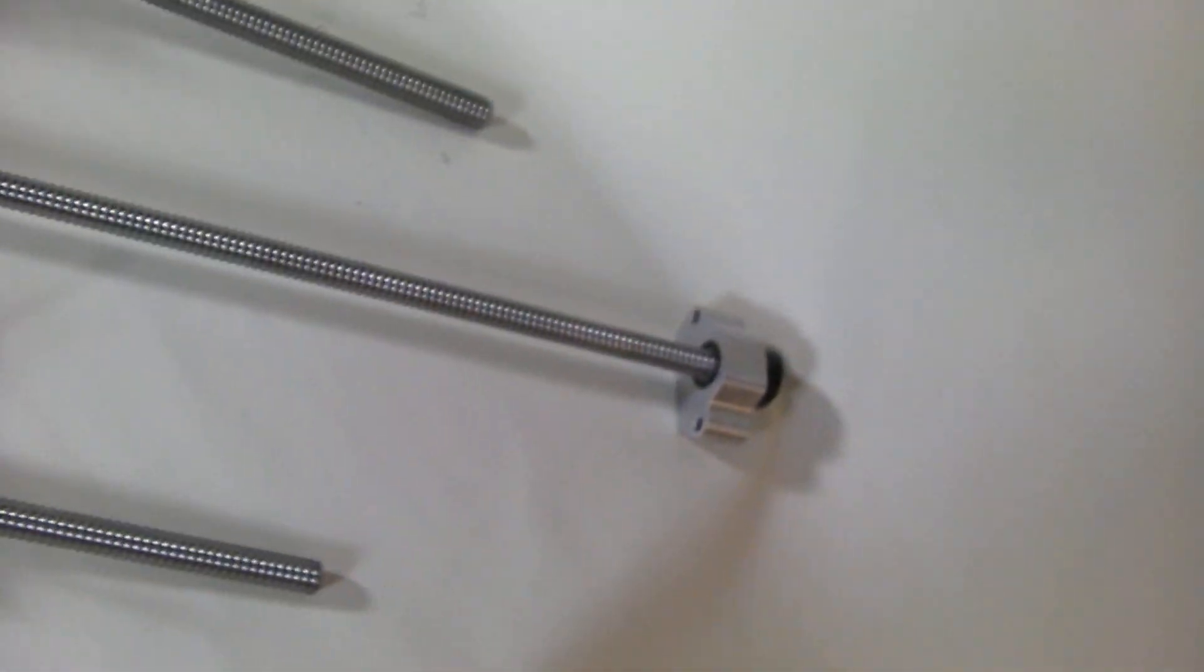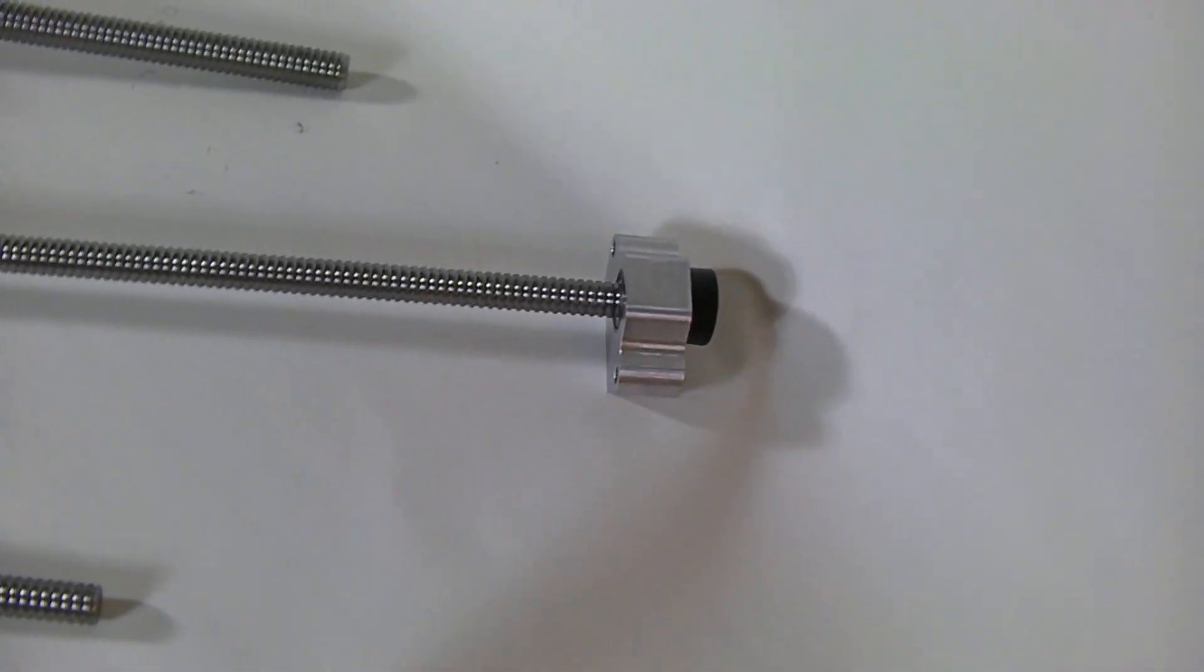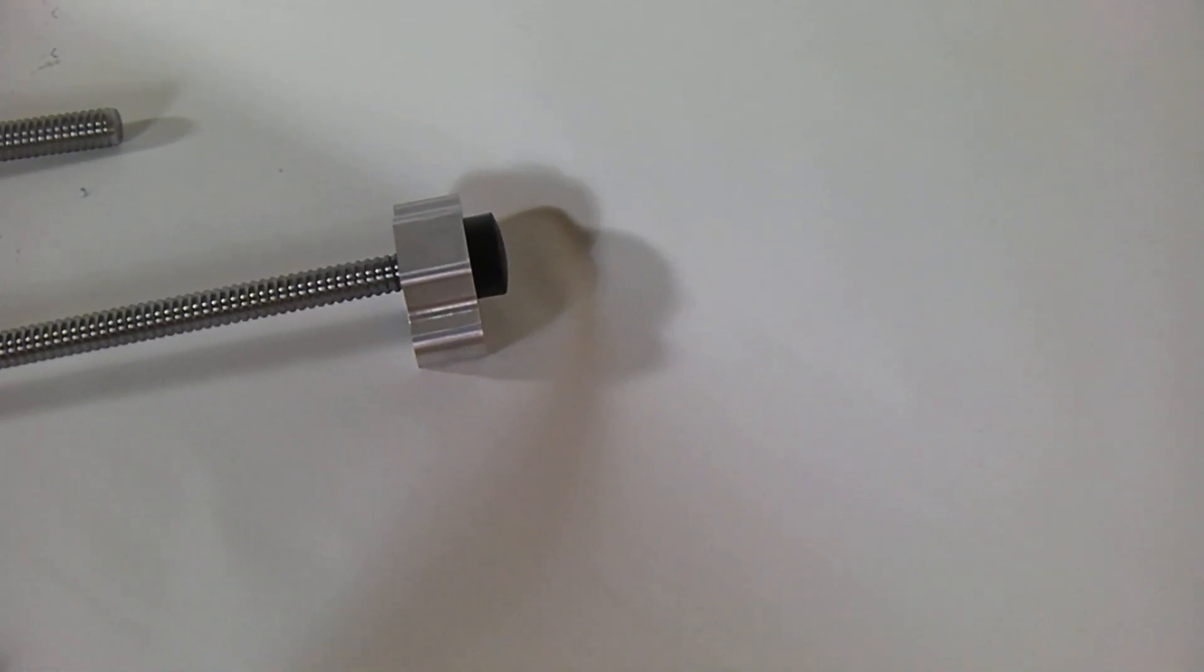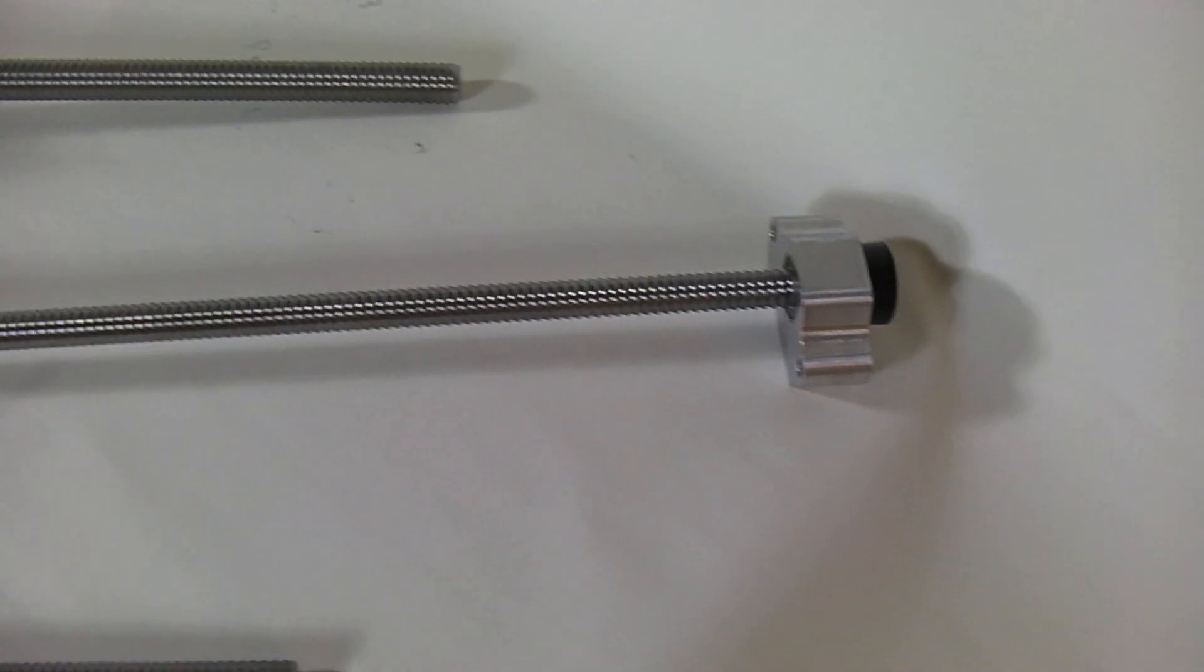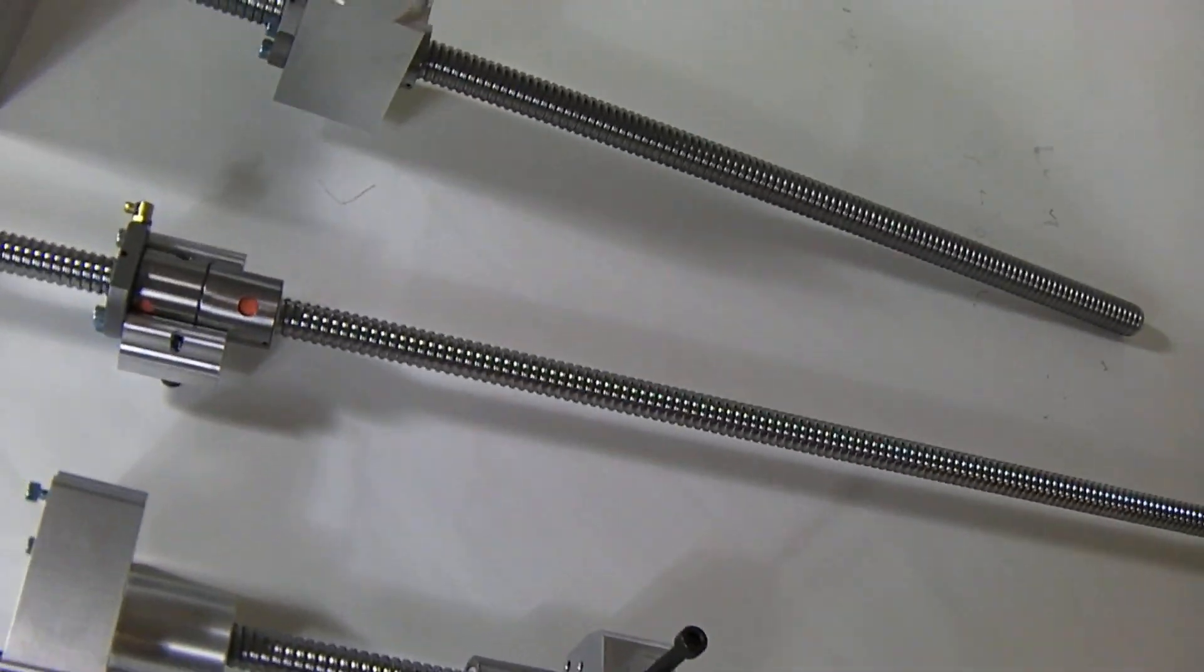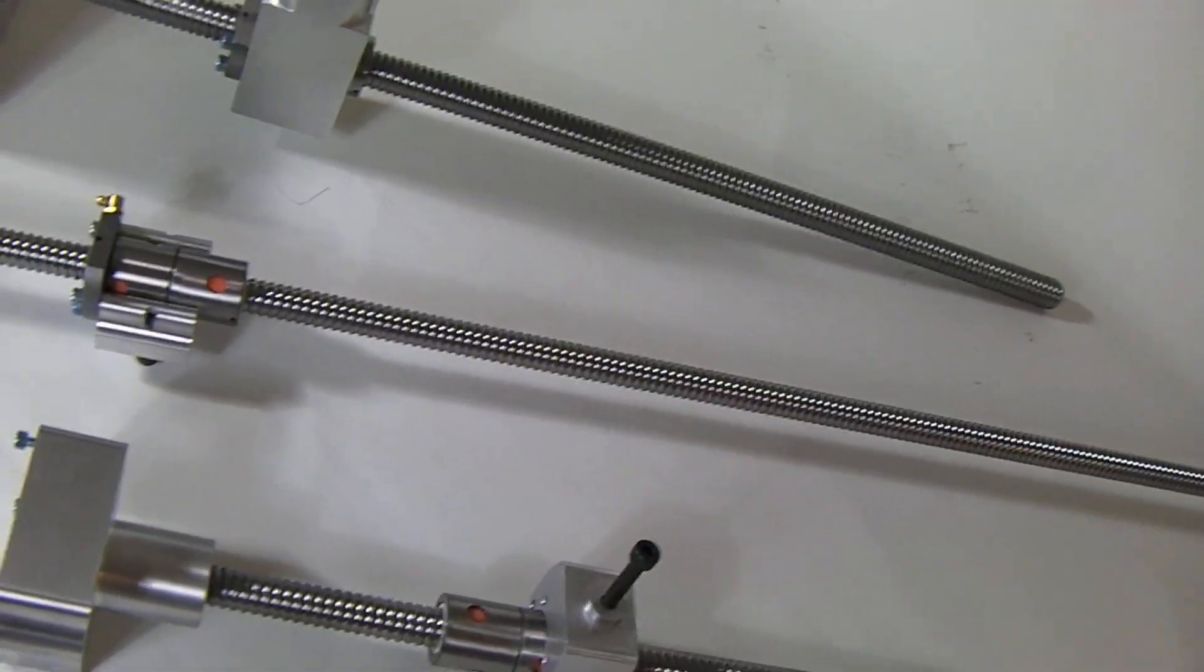You have the double angular contact bearings. They're sealed bearings plus you get the bearing cap on the end, so they'll last pretty much a lifetime. They're adjustable - you can adjust the preload on the angular contacts.